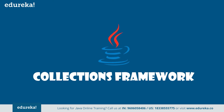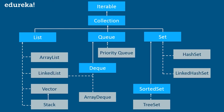Without any further ado, let's get started. A Java collection framework provides an architecture to store and manipulate a group of objects, and it includes interfaces, classes, and algorithms. In this figure, blue boxes refer to the different interfaces and gray color rectangles define classes. So here, list is an interface and ArrayList, LinkedList, and Vector — all these classes implement the list interface.